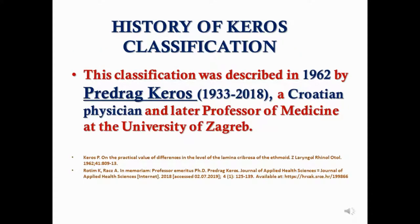What is the history of Keros classification? This classification was first described in 1962 by Pirdrack Keros, a Croatian physician who later became a professor of medicine at the University of Zagreb.